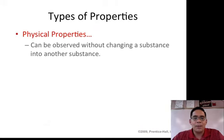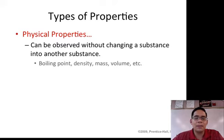So types of properties. There's physical properties that we look at when we talk about the classification of matter. And a physical property can be observed without changing a substance into another substance. So I can observe the boiling point or the temperature at which something boils. I can measure the density by actually calculating the mass or measuring the mass and measuring the volume and then calculating the density. And so these are what we call physical properties of matter.